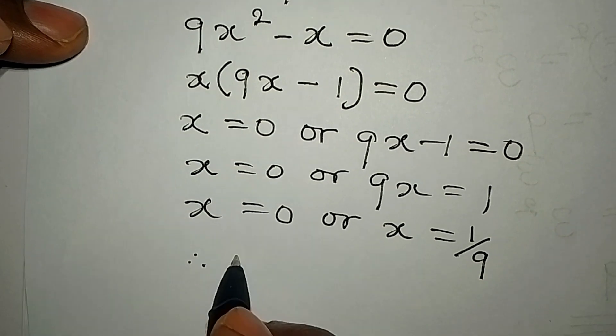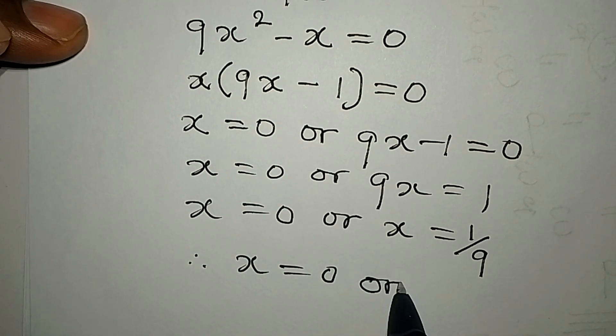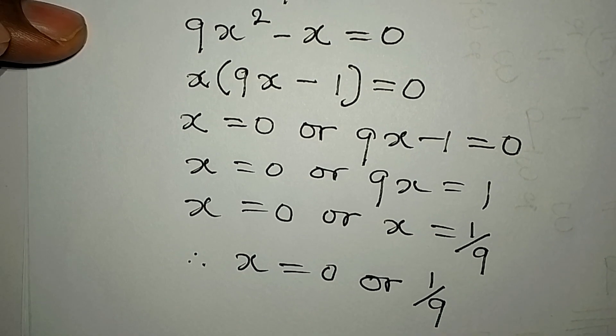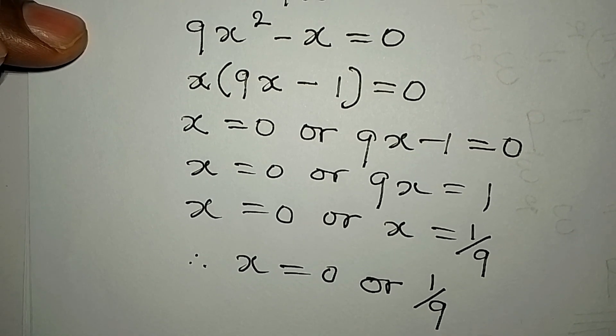Therefore we are saying that x is equal to zero or one over nine. Now this is for the first method.